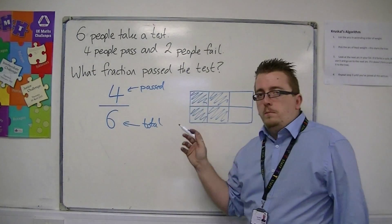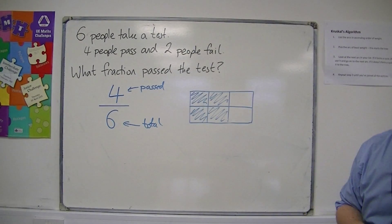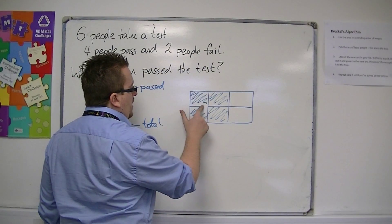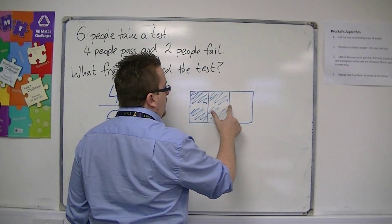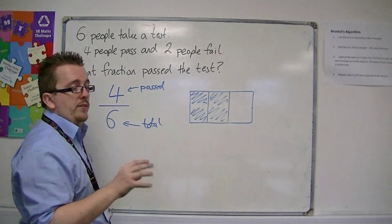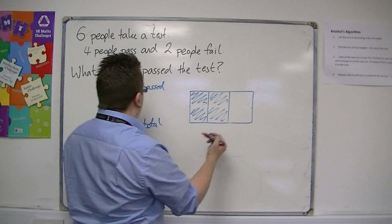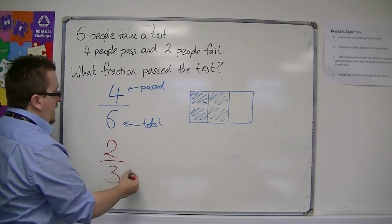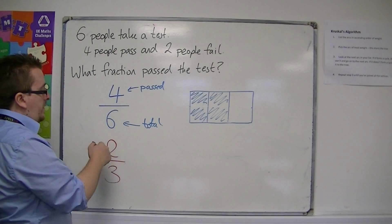So from the diagram, you might then be able to spot, okay, well, if instead I had split this up into threes, then you can see that four sixths covers exactly the same area as two out of three. So in actual fact, two out of three is an equivalent fraction to four sixths.